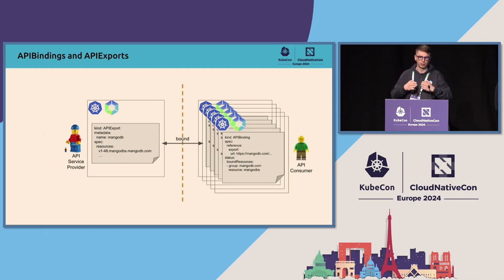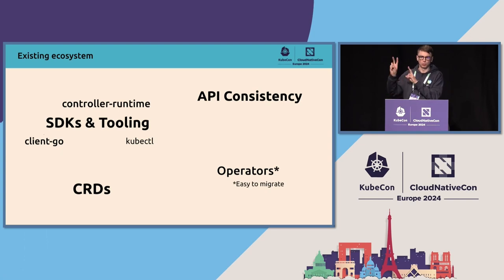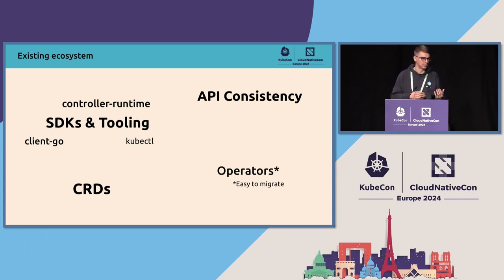We try to decouple those two personas — the platform operator team and the service provider teams. All the APIs are existing-ecosystem compatible. When customers bind the database-as-a-service APIs to their workspace, to a virtual Kubernetes API server, they can use all the existing tooling out there, from SDKs to kubectl. It looks and feels like a Kubernetes API server from their perspective. It's just horizontally scalable with sharding — all the things you want from Kubernetes when you're building a SaaS-based offering on top of it, and what currently Kubernetes doesn't provide.